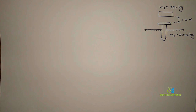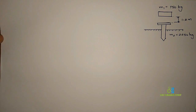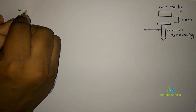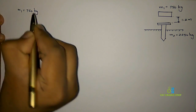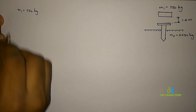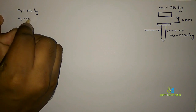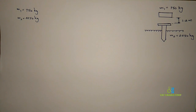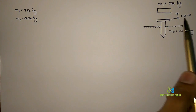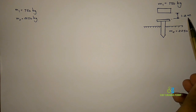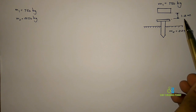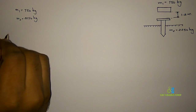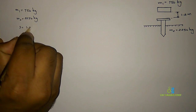First let us write the given data. Mass of the hammer, M1, is given as 750 kg. Mass of the pile, M2, is given as 2250 kg. The distance dropped, S, is given as 1.2 meters — the hammer is dropped from a height of 1.2 meters onto the pile.